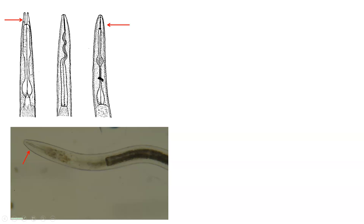Plant parasitic nematodes have a stylet in an oral cavity, which is used to pierce plant tissue and remove sap from it. You can see it illustrated here at the end of the nematode. These illustrations show stylets on plant parasitic nematodes and the format of the stylet. The bottom of the stylet is referred to as a basal bulb, which is attached to muscles that control the movement of the stylet.